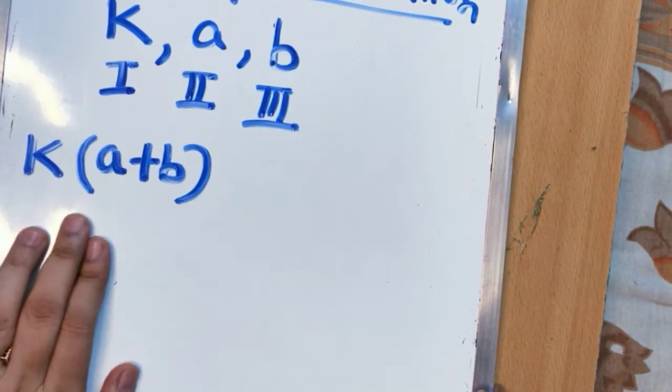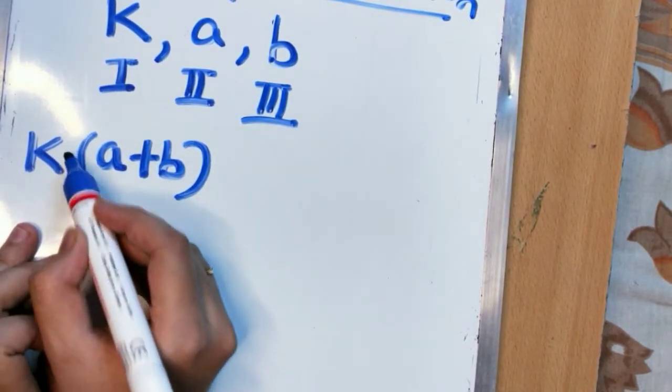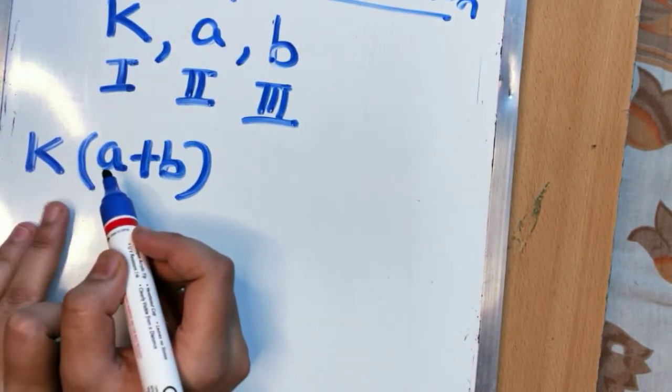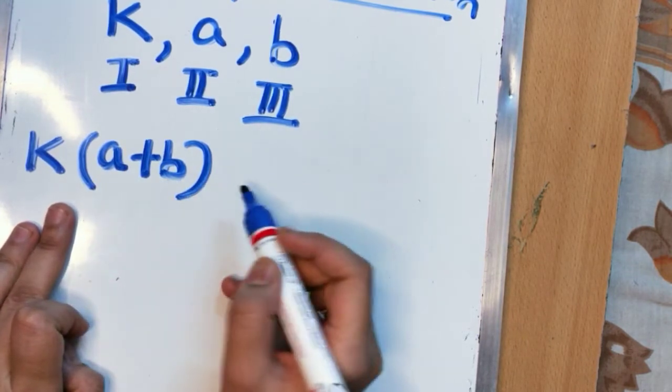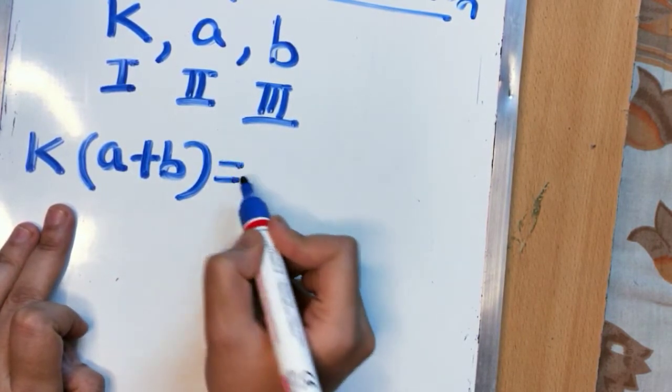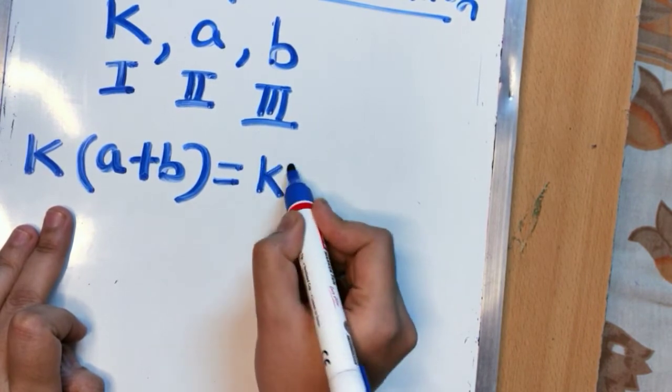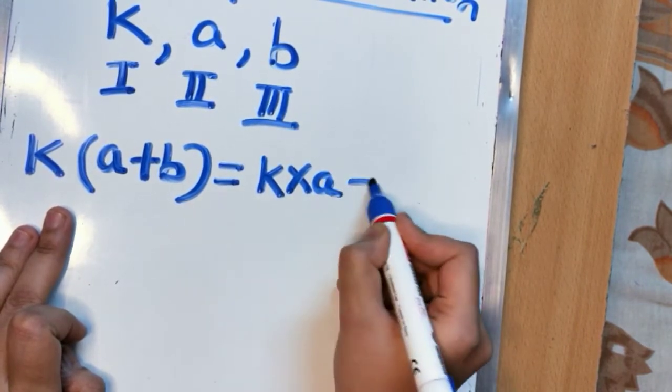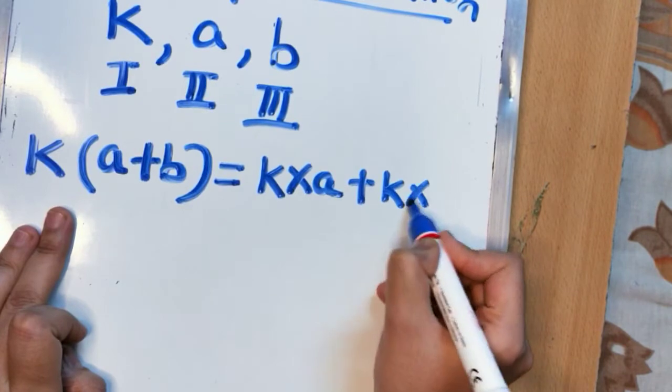If k is getting multiplied here it should be a multiplication sign. If k is getting multiplied with a plus b I can write it as k into a plus k into b.